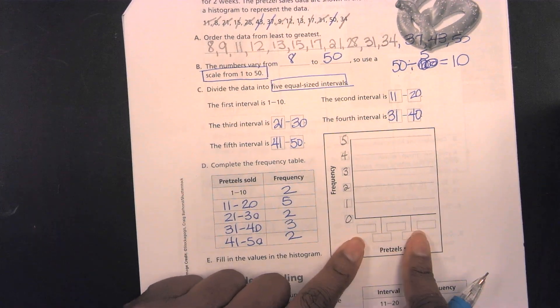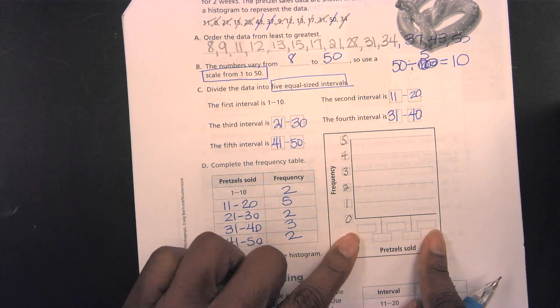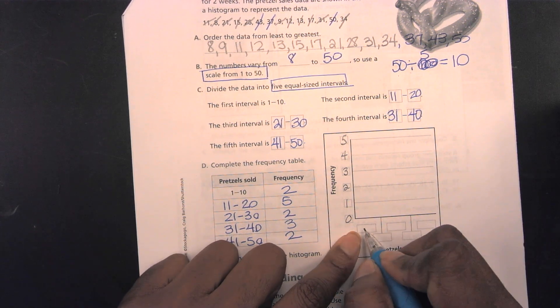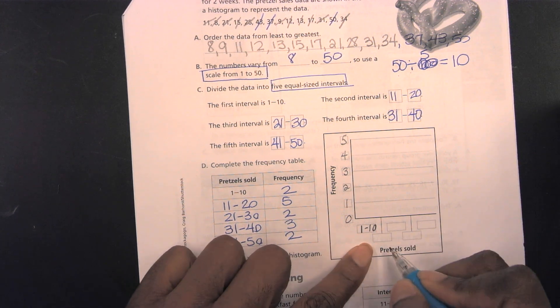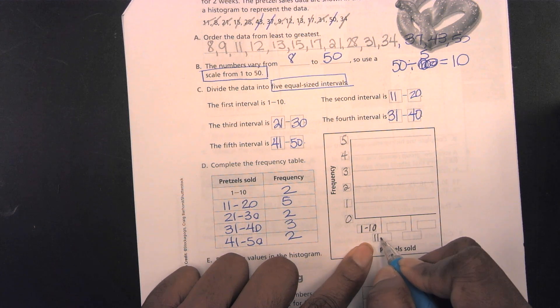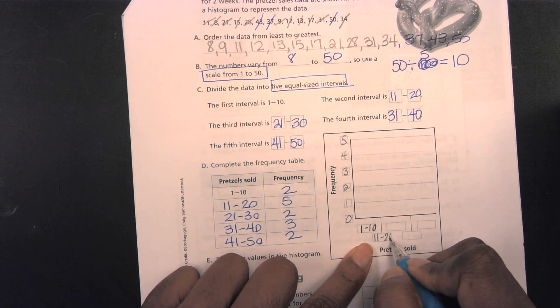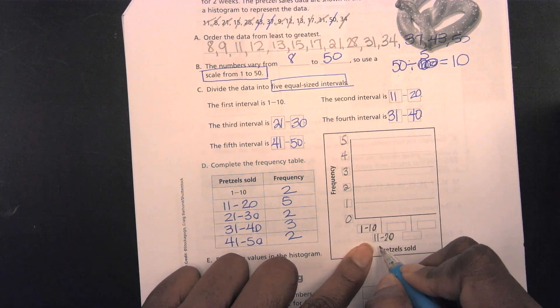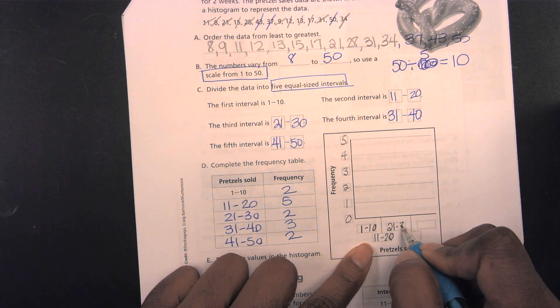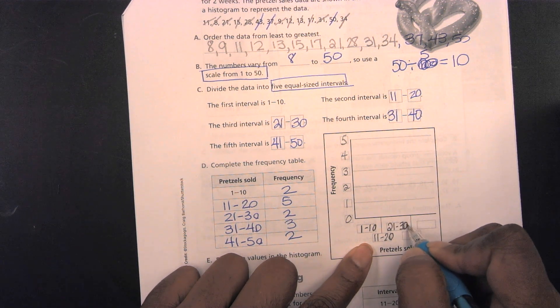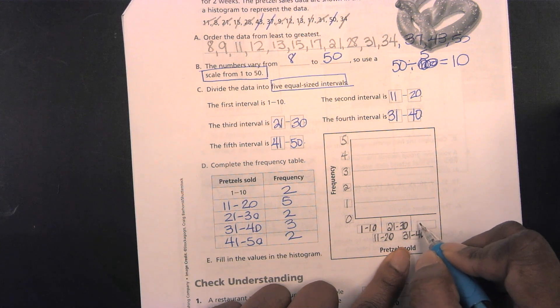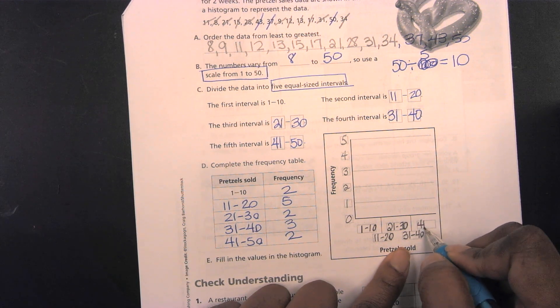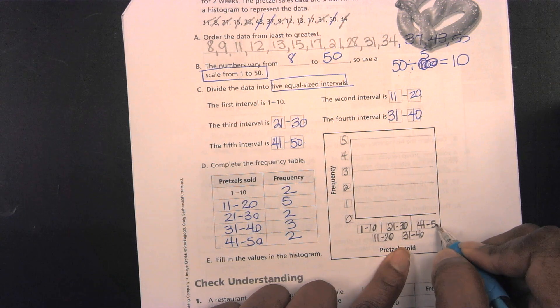Over here is where I put my interval. So, I start off with my first interval, which will be 1 to 10. My second interval, 11 through 20. My third interval, 21 through 30. Fourth interval, 31 through 40. And lastly, my last interval, 41 through 50.